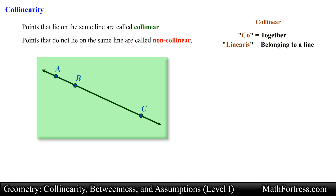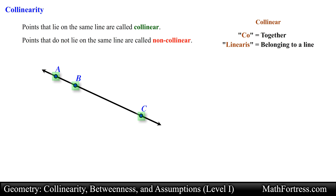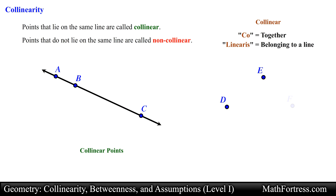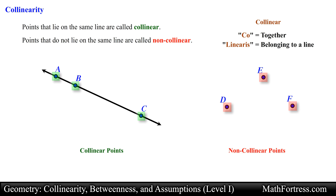In the diagram shown, points A, B, and C are collinear points since they all lie in the same line. Points D, E, and F are non-collinear points since they do not lie in the same line. We want to be able to identify collinear and non-collinear points when solving problems in geometry.